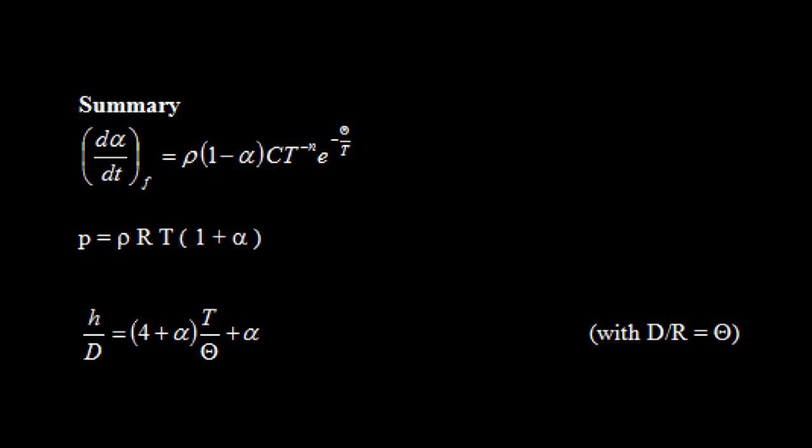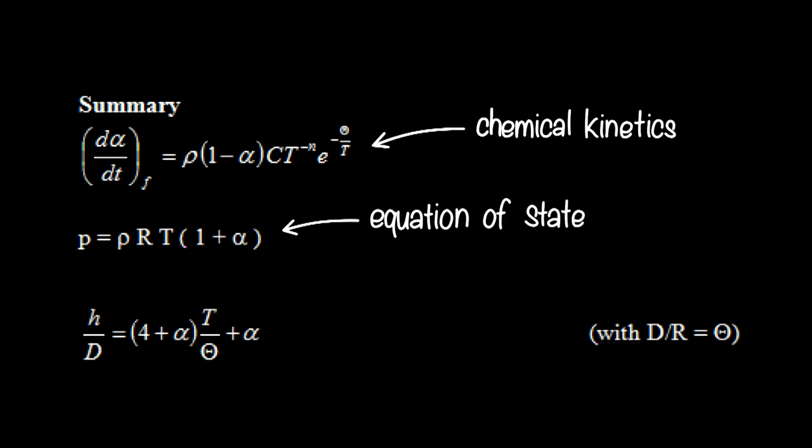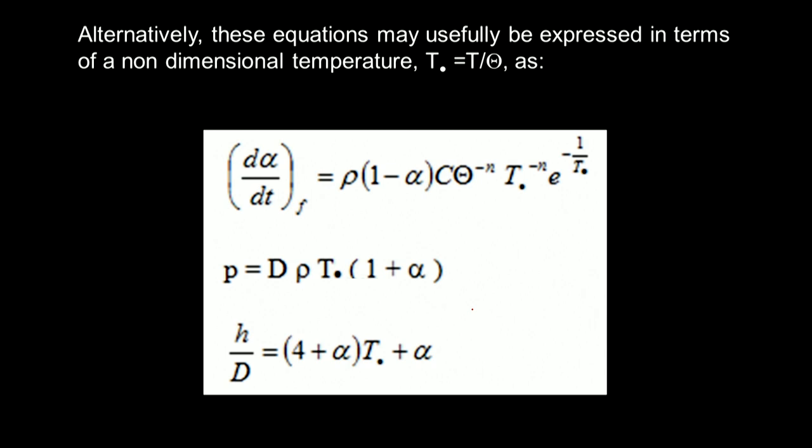And it's a convenient form because we've non-dimensionalized it by dividing through by the dissociation enthalpy. And we're reverting back here in the temperature term to that characteristic temperature we've mentioned before. So in summary then, we have our chemical kinetics term here. We have an equation of state. And we have our enthalpy term. Again, it's convenient to normalize these in terms of temperature T star, which is normalized by the representative temperature of the gas, a function of which gas you're using. And remember, these characteristic temperatures are very large, so the non-dimensional temperatures are pretty small, 0.05, 0.1, those sort of numbers in a reacting flow.